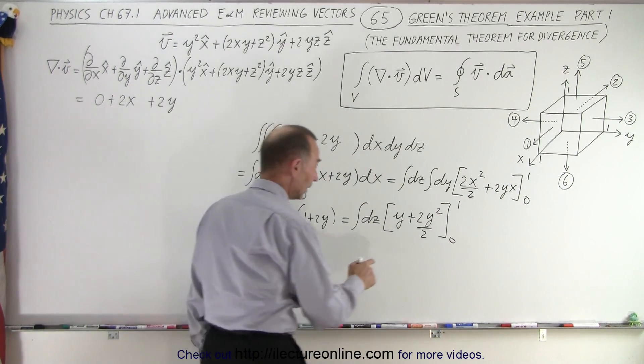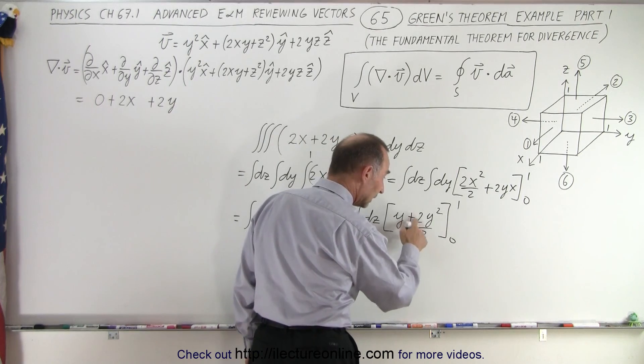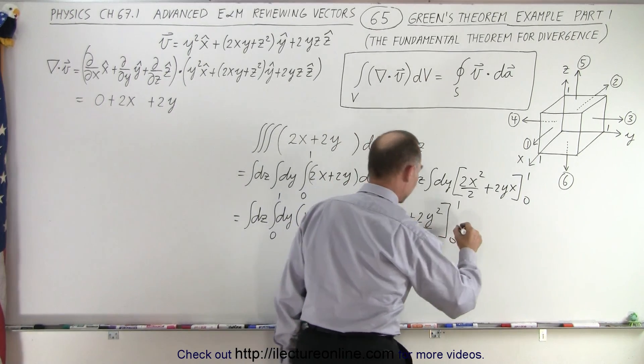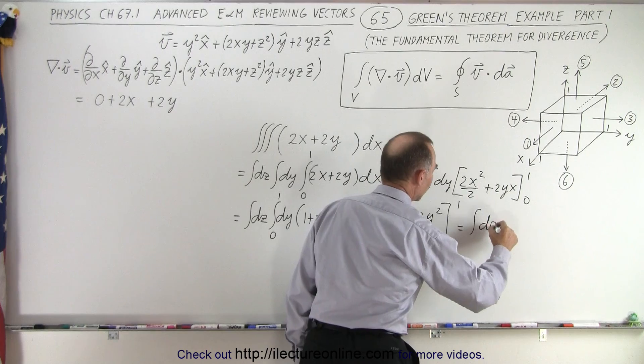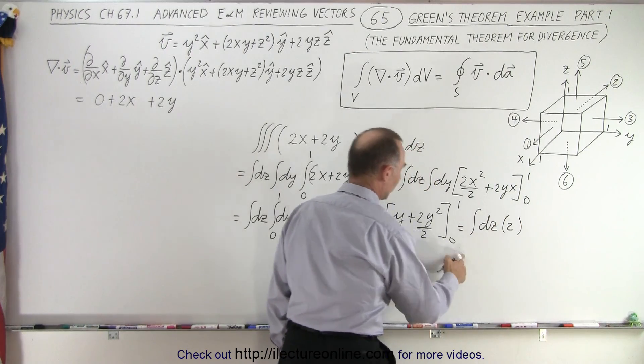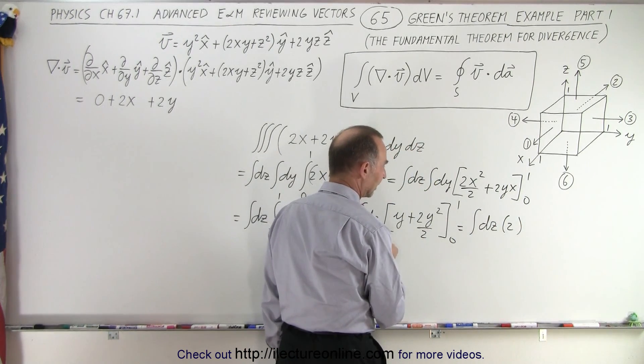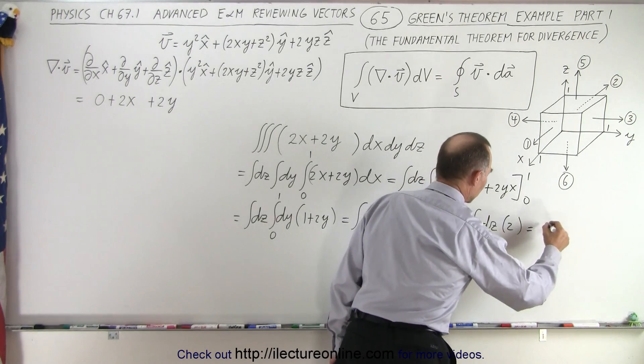When you plug in the upper limit you get 1 plus 1, so we get this is equal to the integral of dz times 2, because when we plug in the lower limit you get nothing, so this is equal to the integral,